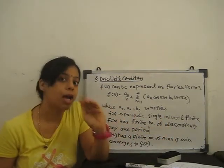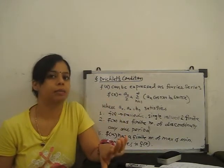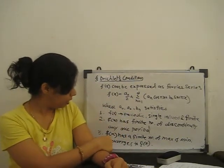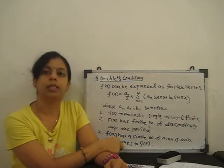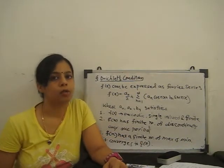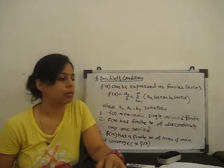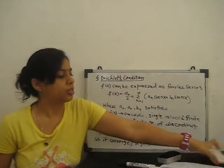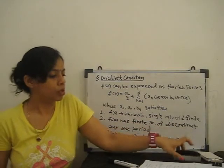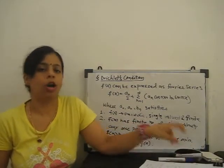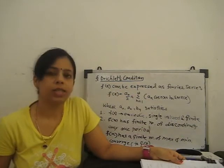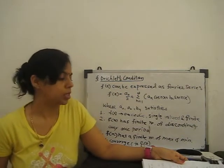Condition 3: f(x) has a finite number of maxima and minima. At those points, the function converges to f(x). If it converges, then we can find the Fourier series. Basically, the Dirichlet condition is the uniform convergence condition for the Fourier series.